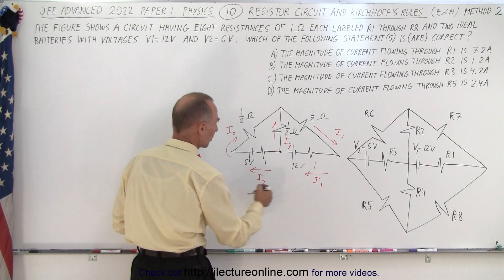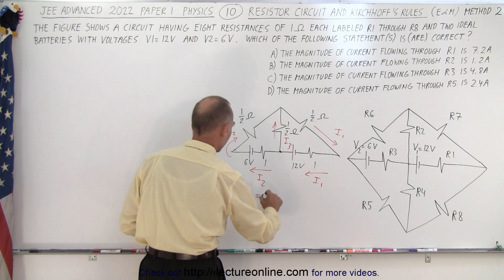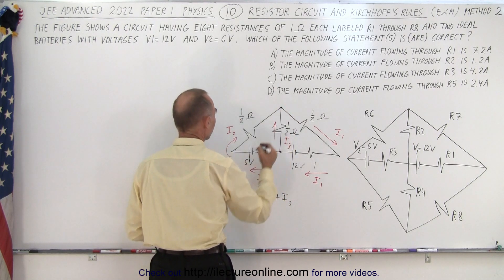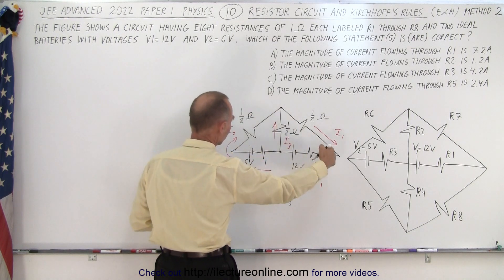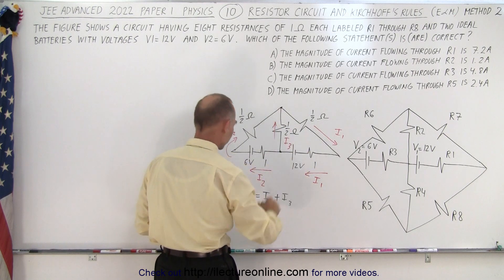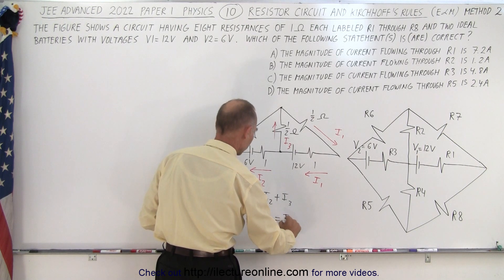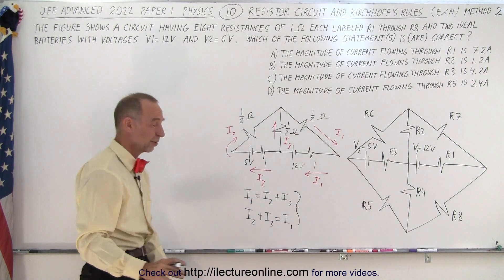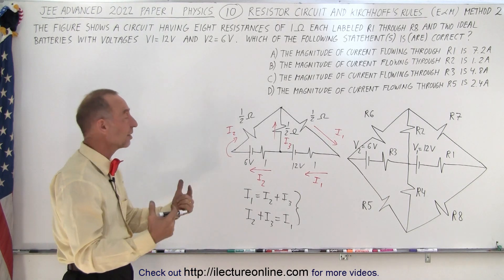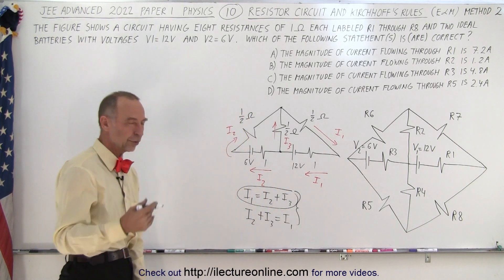Using Kirchhoff's current rule at this junction, I1 enters and I2 and I3 leave, giving us I1 = I2 + I3. At the other junction, I2 + I3 = I1, which turns out to be the same equation. So we only get one useful equation from KCL and will use it to reduce the others.